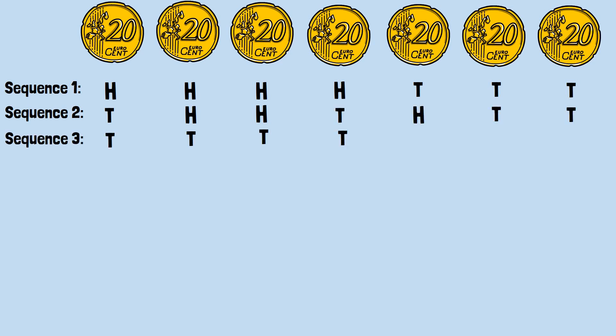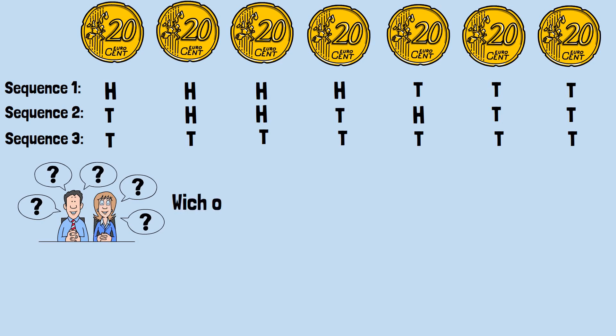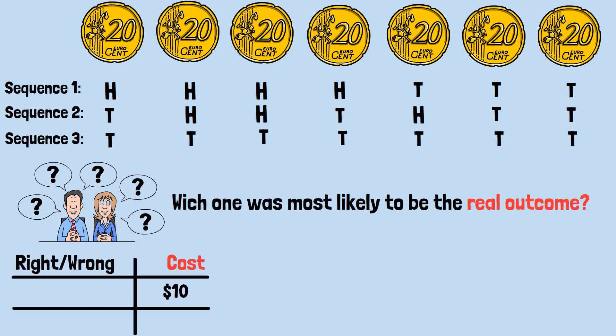Sequence 3: Tails, tails, tails, tails, tails, tails, tails. Here's the question. Which one was most likely to be the real outcome? Let's say you had to bet on it. It costs you $10 if you're wrong. And you win $30 if you're right.